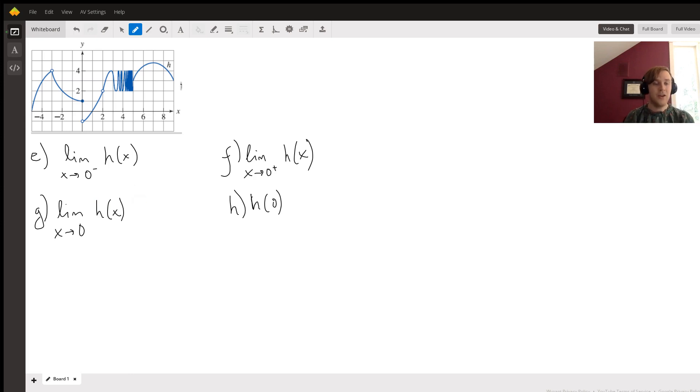What that means is that we're being asked to see what the Y value is that we're approaching as we get closer and closer to X equals zero. As we get closer and closer to the X value of zero, what Y value are we getting closer and closer to?